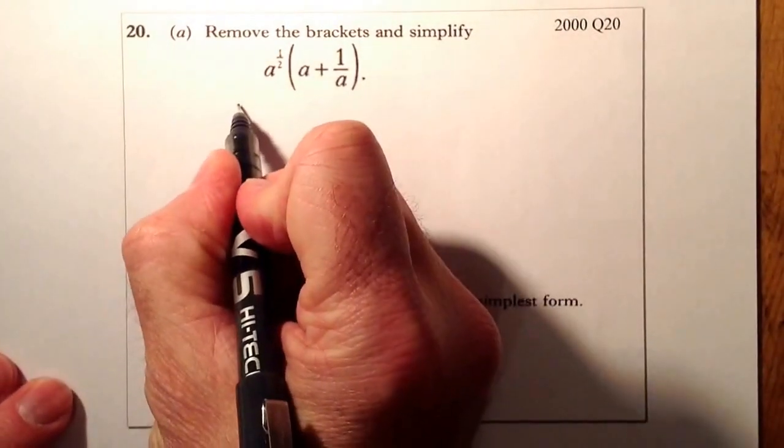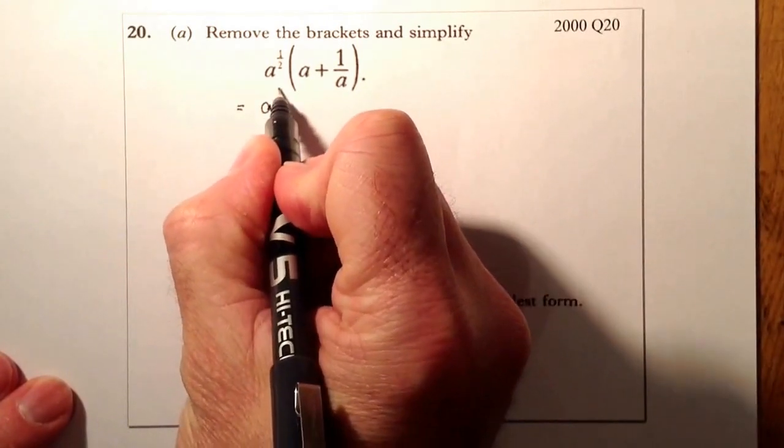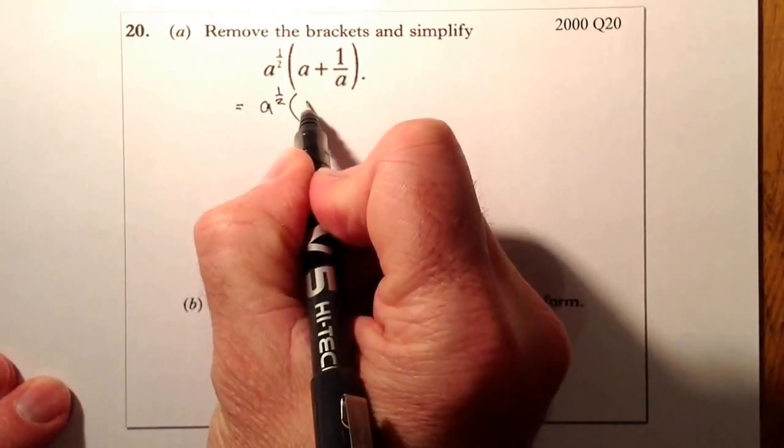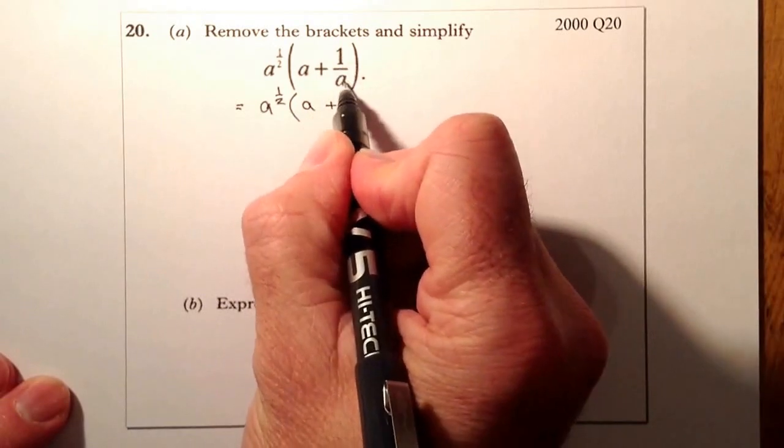So first of all, I'm just going to prepare it before I multiply it out. So there's a to the power of a half, bracket a, plus, and all I'm going to do is,